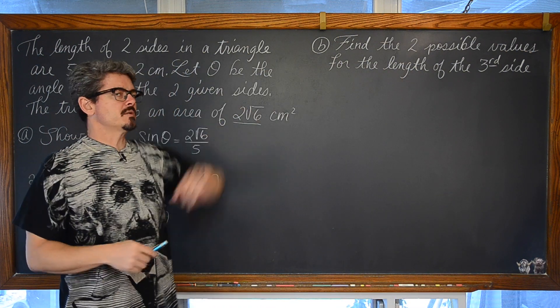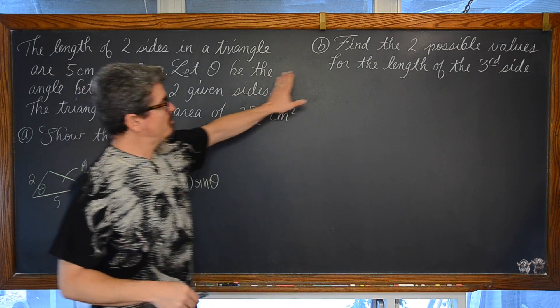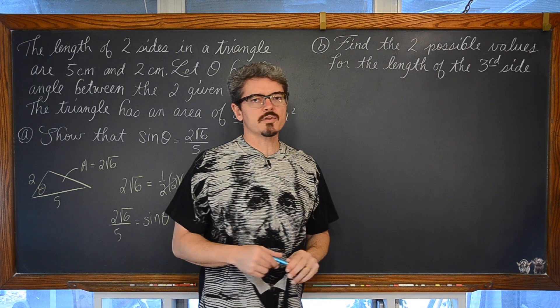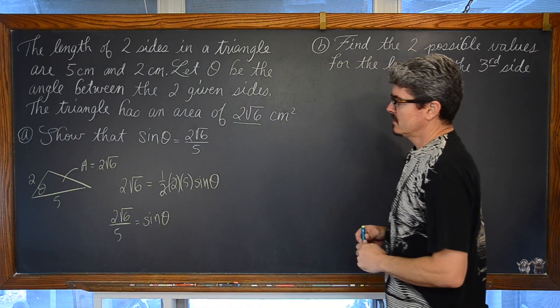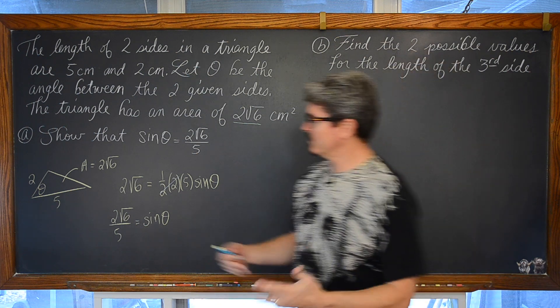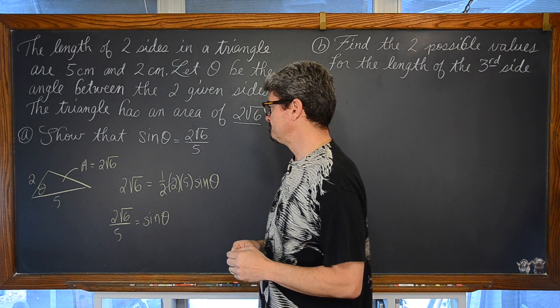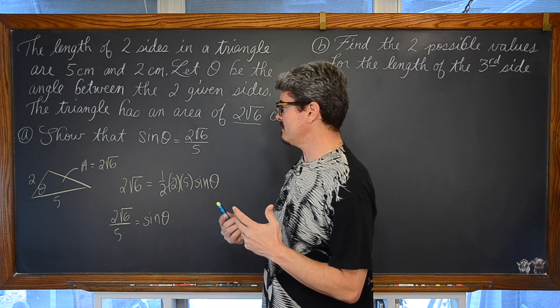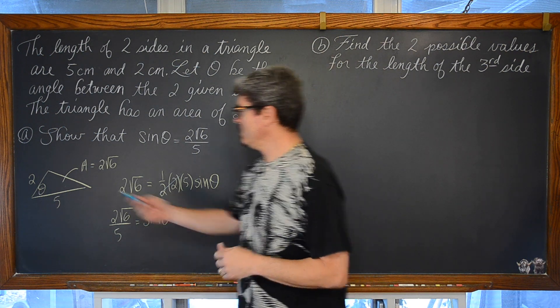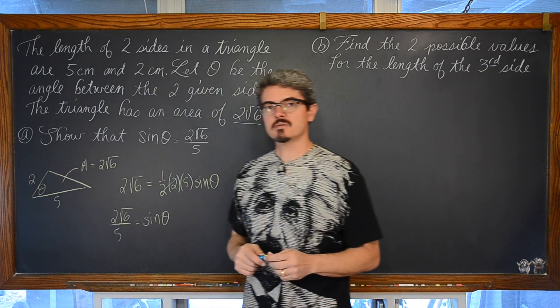So, getting on to the more interesting part of this question. Part B. Find the two possible values for the length of the third side. So, we can have sort of a triangle that looks like this. Or maybe there is some other angle measure that gives us the same area.